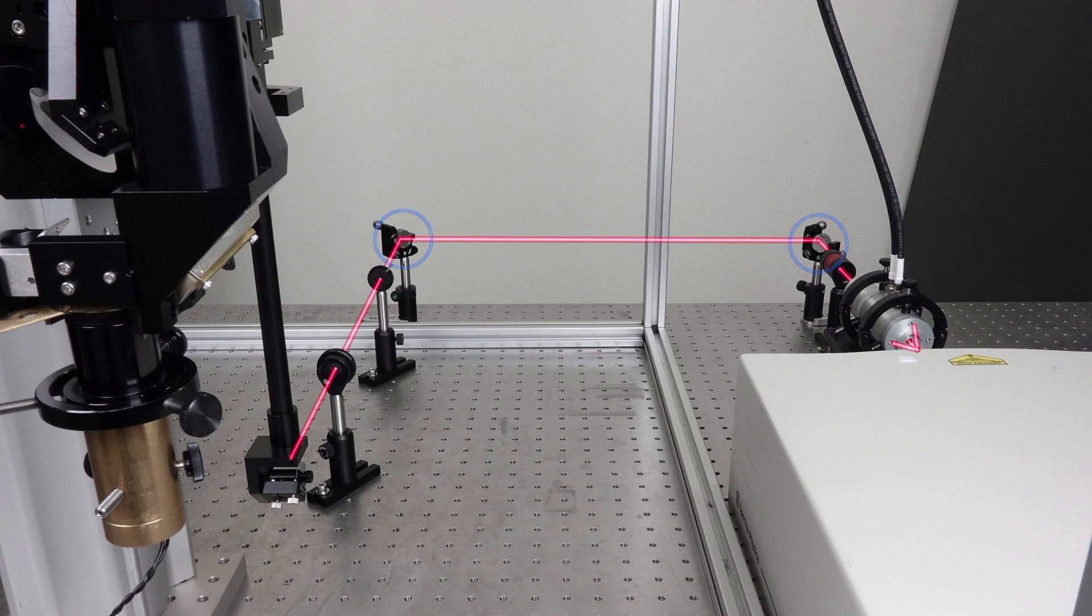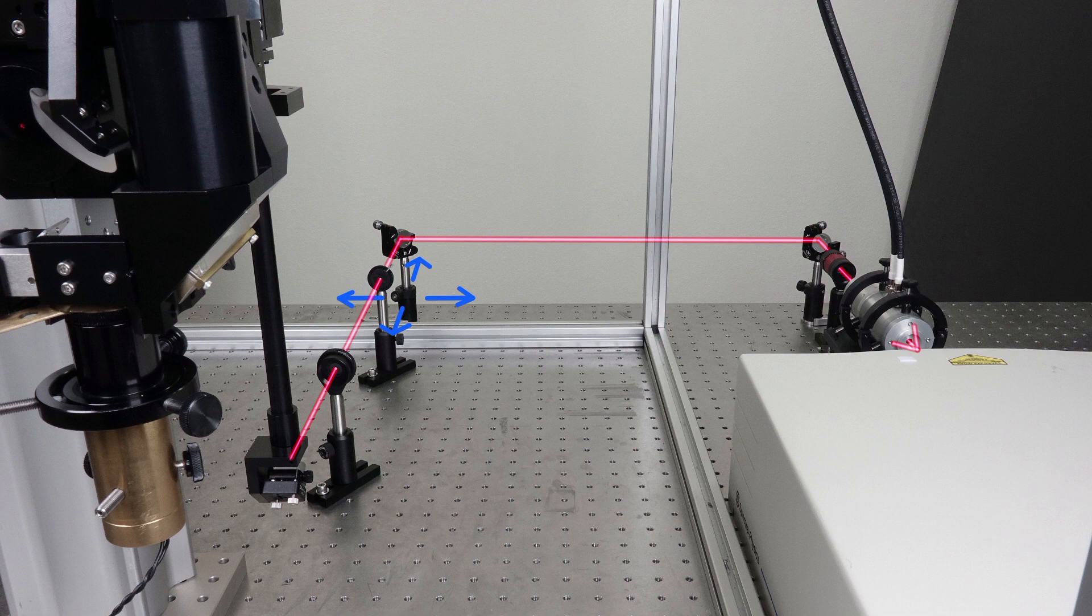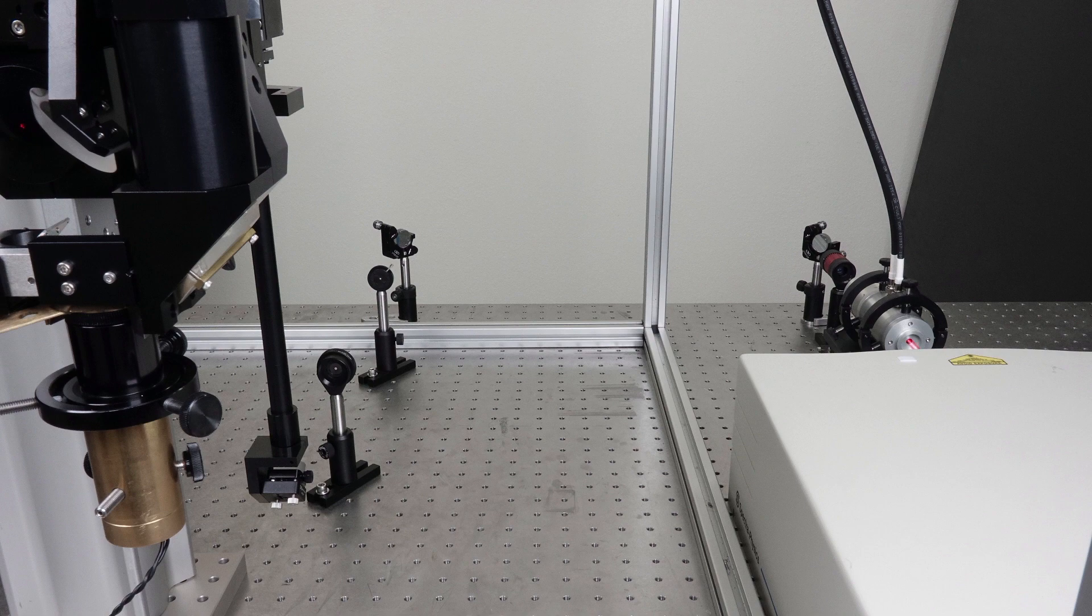I like to use this as my opportunity to reposition any mirrors necessary by aligning the beam backwards towards the imaging laser. This will get my imaging beam closer to the target when we switch over to the imaging laser and work it back through the microscope.